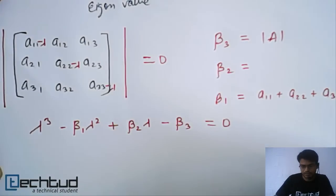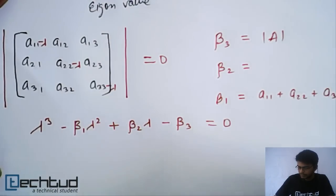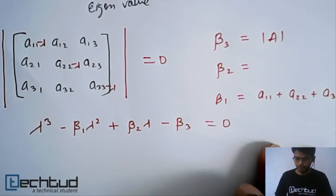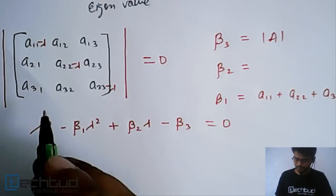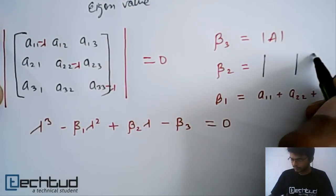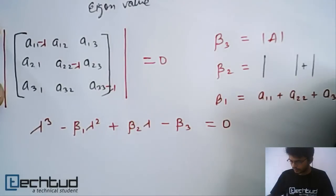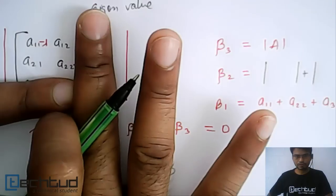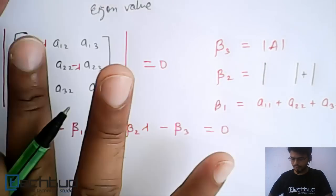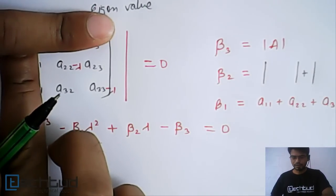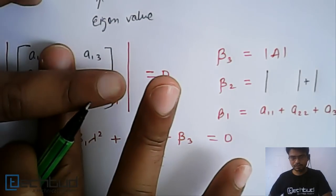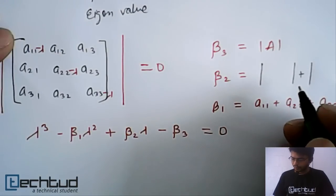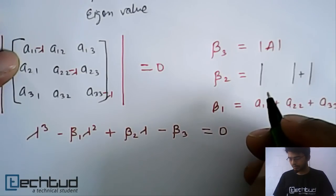Now let's come to beta2, which is a little tricky to remember. To find beta2 you take three 2×2 minors. You delete the first row and first column, then the second row and second column, then the third row and third column — and sum the determinants of those three minors.